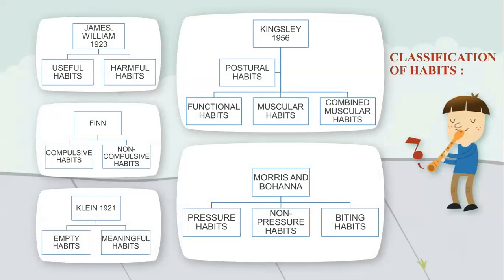The classification of oral habits: as classified by James William in the year 1923, habits are classified into useful habits and harmful habits. Useful habits include all habits of normal function such as correct tongue position, proper respiration and deglutition. Harmful habits are those that exert perverted stress against teeth and the dental arches — for example, mouth breathing and tongue thrusting. We can also classify habits into compulsive and non-compulsive habits. Compulsive habits are acquired as a fixation in the child to the extent that he retreats to the practice whenever his security is threatened. Whereas non-compulsive habits are when children appear to undergo continued behavior modification, permitting them to release certain undesirable habit patterns and form new ones which are socially acceptable.